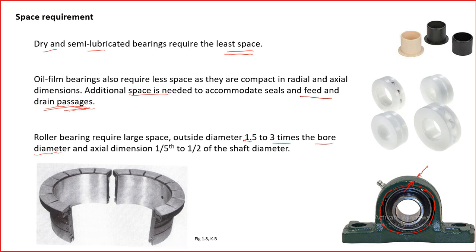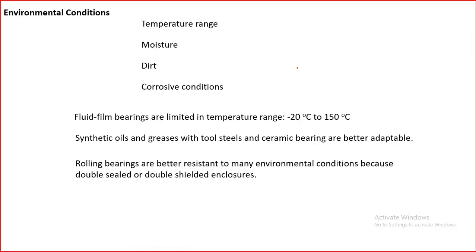In general, dry and semi-lubricated bearings are preferred if we can manage in terms of friction and wear. Another important requirement is environmental conditions — under what conditions the bearings will be running, such as temperature range, moisture, dirt, and corrosive conditions. In general, we must provide a proper seal to protect the bearing from outside dirt, moisture, and corrosive elements.